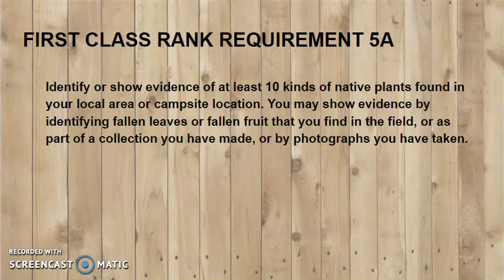Identify or show evidence of at least 10 kinds of native plants found in your local area or campsite location. You may show evidence by identifying fallen leaves or fallen fruit that you find in a field, or as part of a collection you have made, or by photographs you have taken.